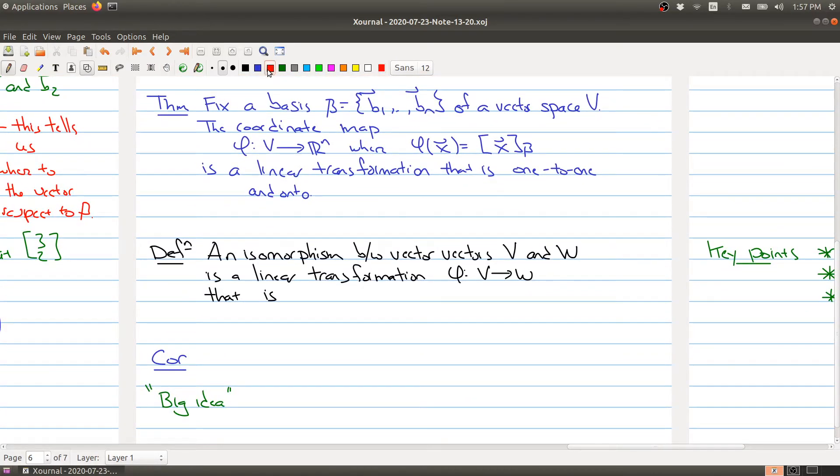So before we go further, I want to introduce a new term. An isomorphism between vector spaces V and W is just a linear transformation from V to W that is one-to-one and onto. So that's exactly what we have in the previous theorem. So as a corollary of this, we have that the coordinate map is an isomorphism.